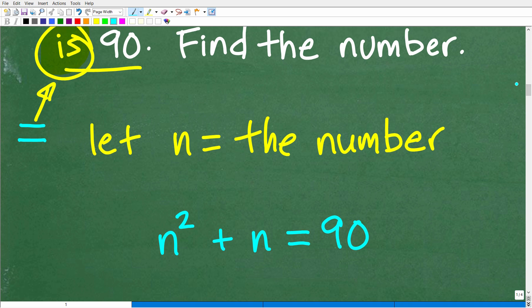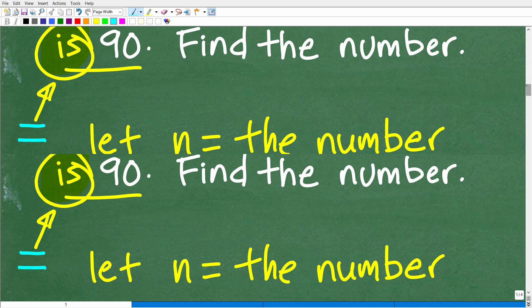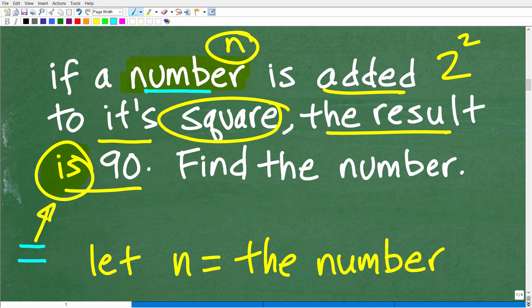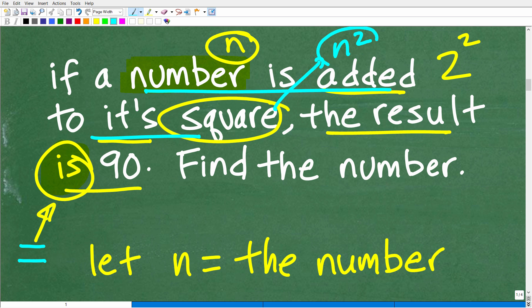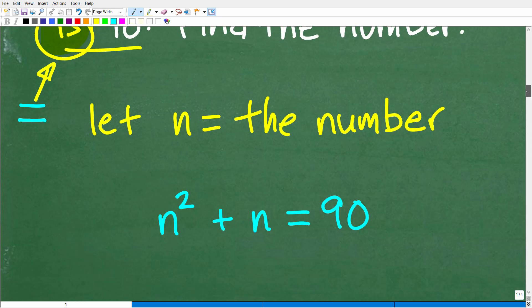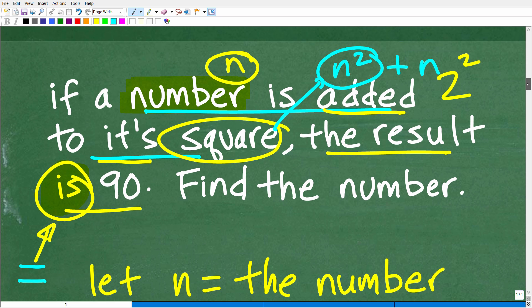Let's let N equal this number. If a number is added to its square - let's walk through the sentence nice and slow. If the number is N, what is the square? That would be N squared. So if a number is added to its square, here is its square, and we're going to add the number N to its square. So that's going to be N squared plus N.